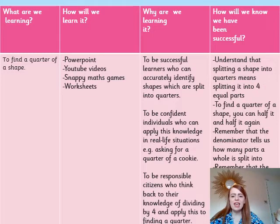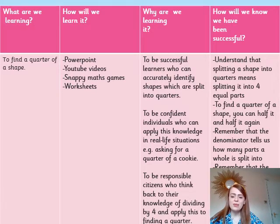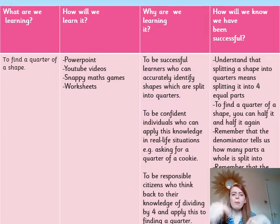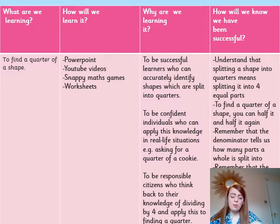So how will you know that you've been successful? Well, you need to understand that splitting a shape into quarters means splitting it into four equal parts, and as we know from last week, that word 'equal' is really important in fractions because all of the parts must be the same size. To find a quarter of a shape you can half the shape and half it again. Remember that the denominator is the number on the bottom of the fraction and that tells us how many parts a whole is split into, and the numerator tells us how many of these parts we are referring to.